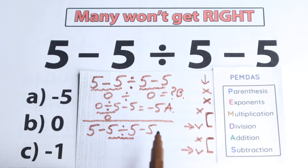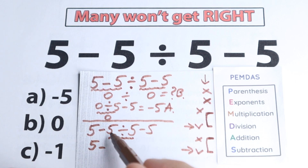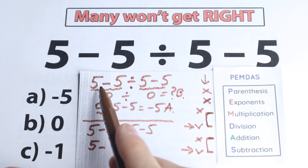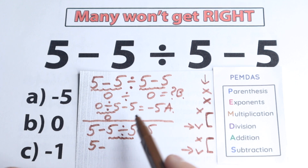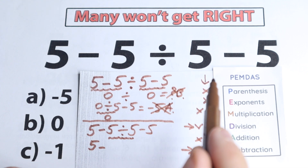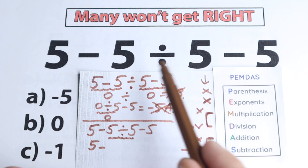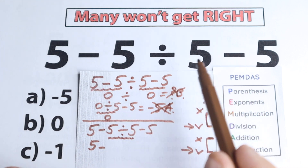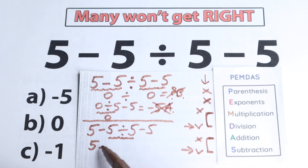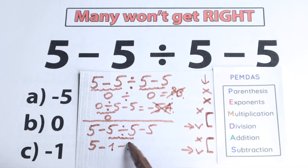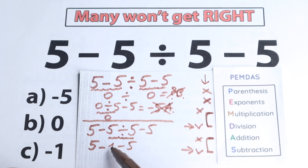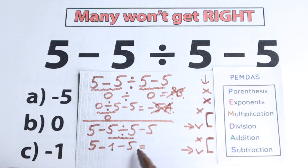Division is before subtraction all the time. So we have 5 minus 5 divided by 5 — our first step is to compute 5 divided by 5, not 5 minus 5 first. Doing 5 minus 5 first, getting 0 divided by 5, is absolutely the wrong solution. Students solve it that way when they don't know about order of operations — they go from left to right without knowing the correct order. So 5 divided by 5 equals 1, giving us 5 minus 1 minus 5. Then 5 minus 1 equals 4, and 4 minus 5 equals minus 1.